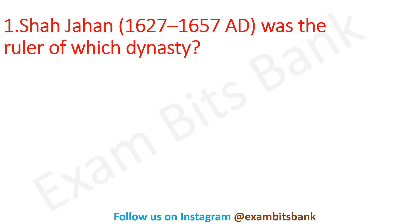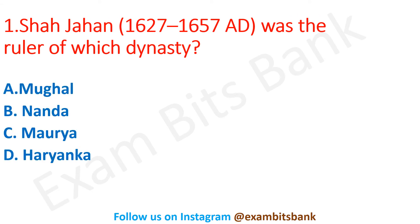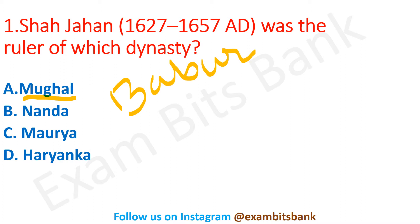First question: Shah Jahan was the ruler of which dynasty? Options are Mughal, Nanda, Maurya, or Haryanka. The correct answer is option A — Mughal. Shah Jahan was the fifth Mughal emperor. The founder of the Mughal dynasty was Babur. Shah Jahan was widely considered to be one of the greatest Mughal emperors.